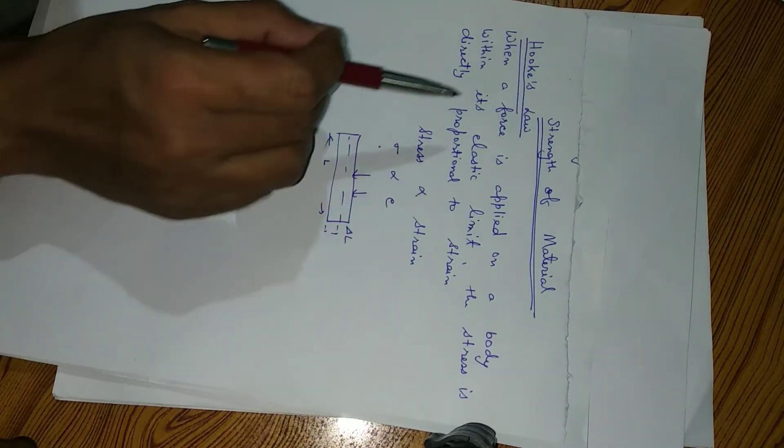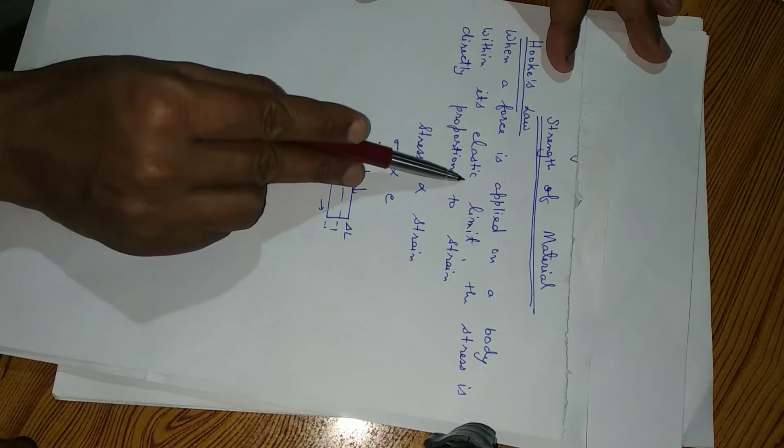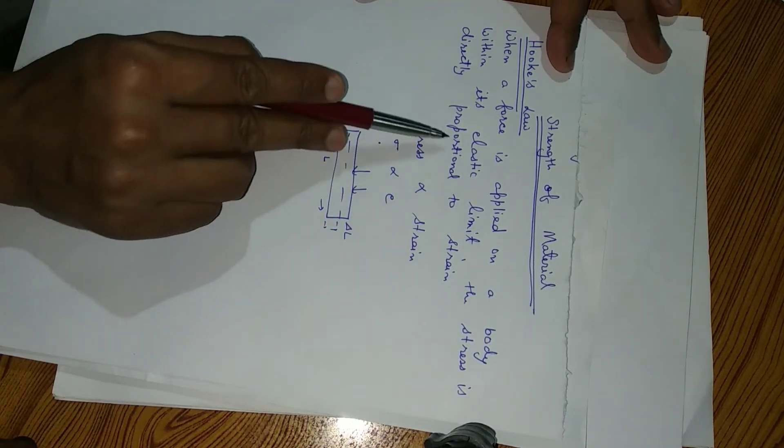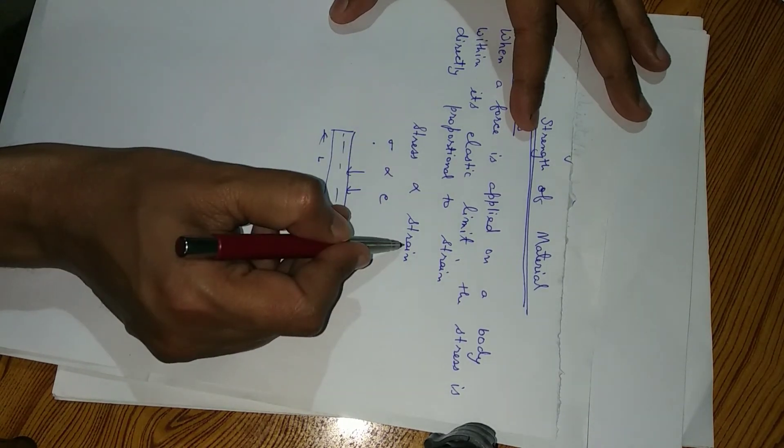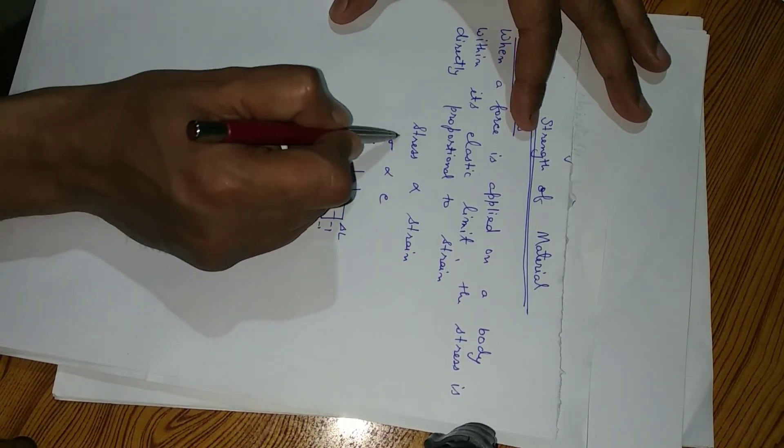Hooke's law says that when a force is applied on a body within its elastic limit, the stress is directly proportional to the strain. Stress is directly proportional to strain. Stress is shown by sigma.